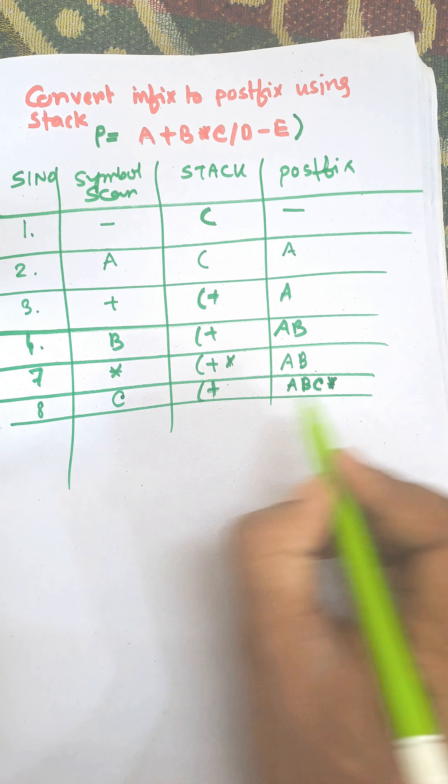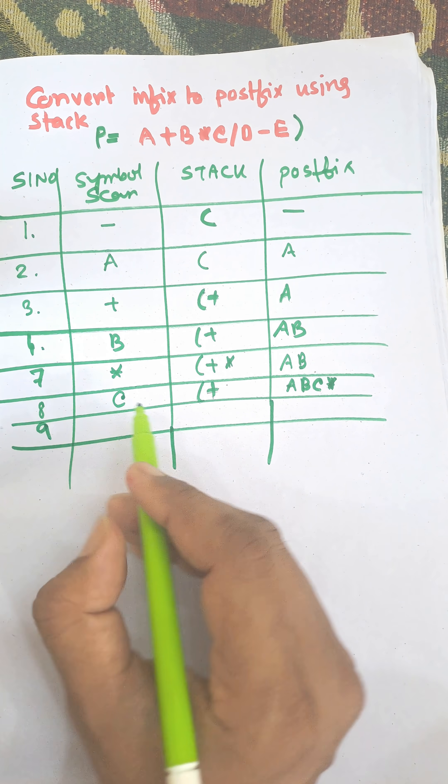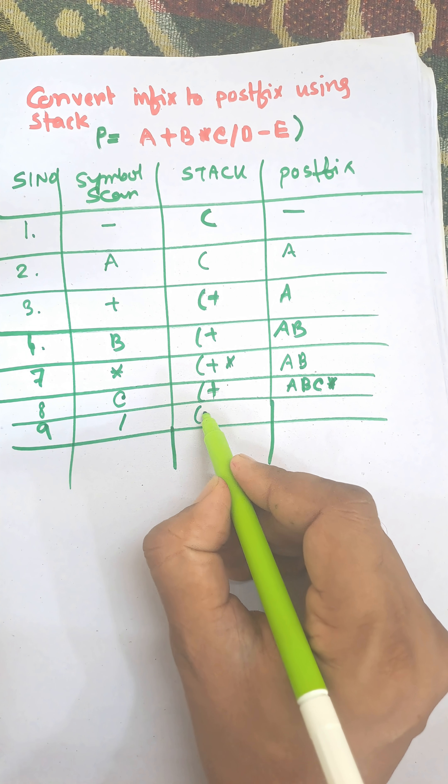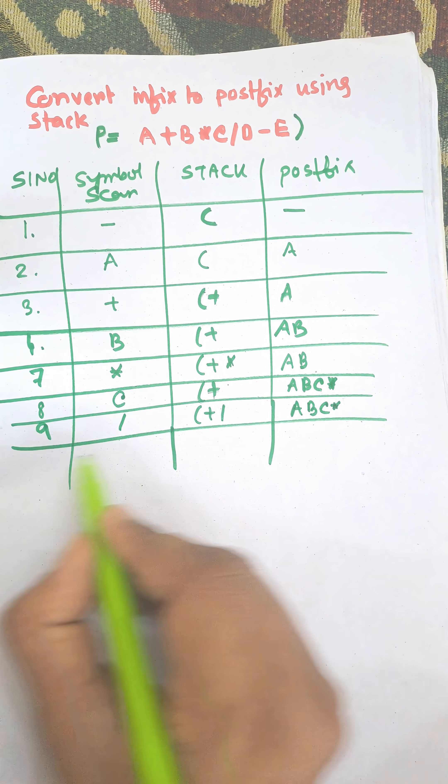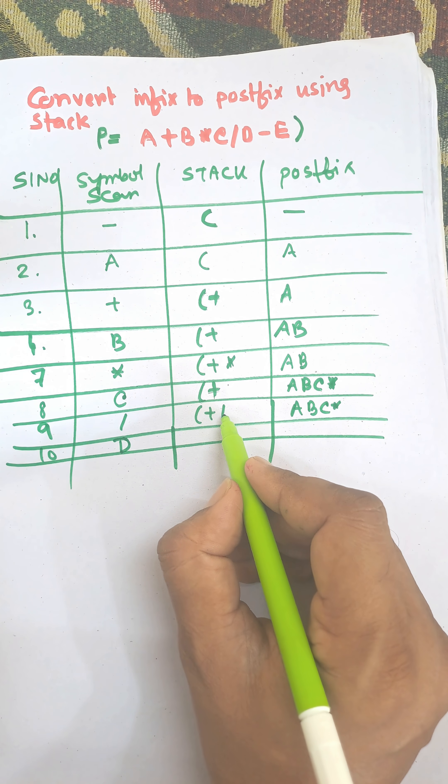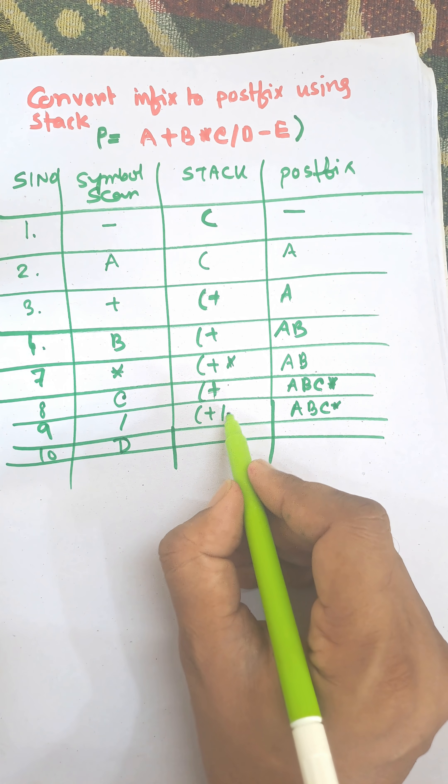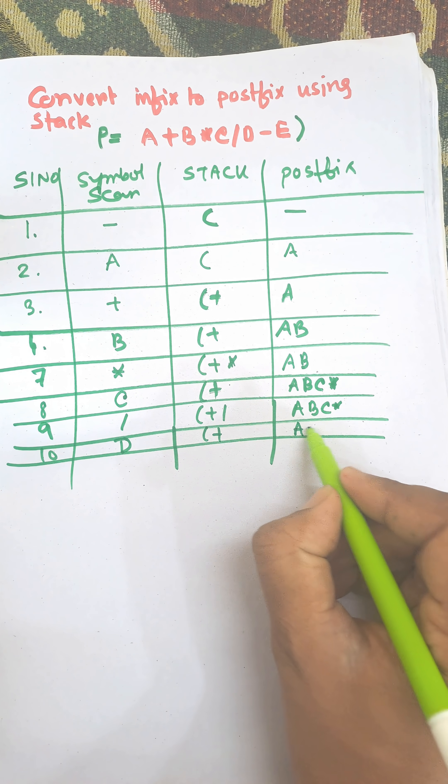Next one is division and division will be pushed to the stack. When D arrives, then division operator will be popped from the stack because the priority of division is greater than plus: A B C multiply D division.